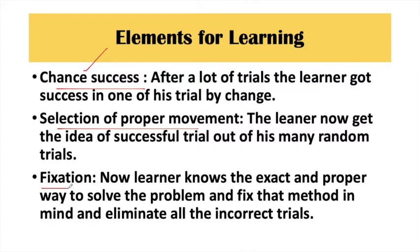The next element is fixation. After selecting the proper moment, the correct response is fixed in the mind, and the incorrect responses are eliminated. If the learner has learned something about puzzle solving, they eliminate the wrong methods and fix the correct method in their mind. So these are the elements of learning which Thorndike told us, based on his experiment on the cat.